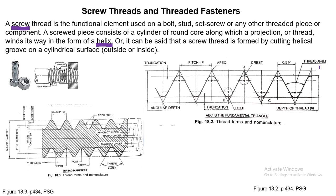The thread angle is the angle between the two inclined surfaces. For a V-thread, the inclined surfaces are called flanks. The angle between the two flank surfaces is the thread angle.